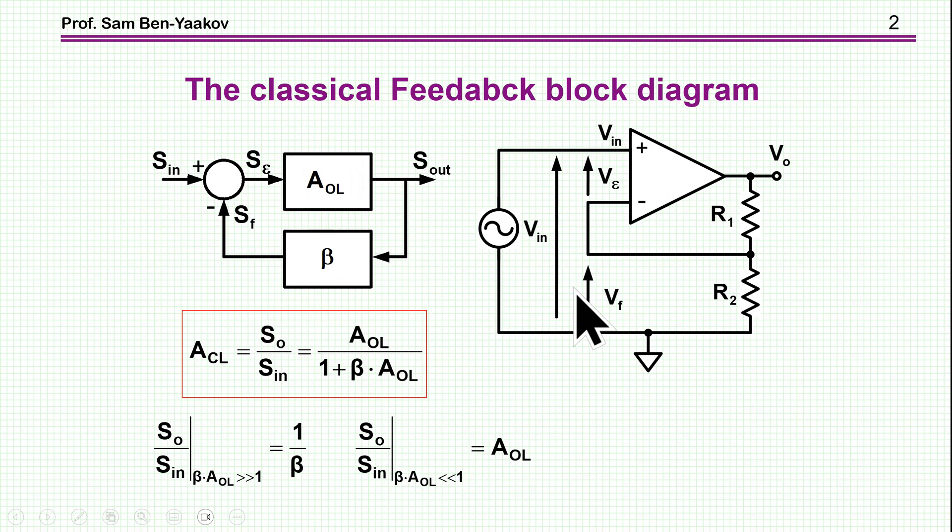And this fits one-to-one to the non-inverting amplifier. Here we have the input into the summing junction, which is the input stage of the operational amplifier, the differential stage. This is the summing junction, and then we have the gain of the amplifier, the operational amplifier, and the feedback that goes into the negative input. This is why we have this negative sign here.